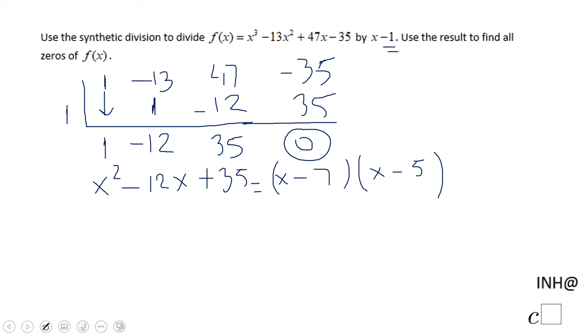So use the result to find all the zeros of f of x. That's the second part. Now let's write the factored form. The factored form will be x minus 1, which was a factor because the remainder was 0, times x minus 7, times x minus 5.